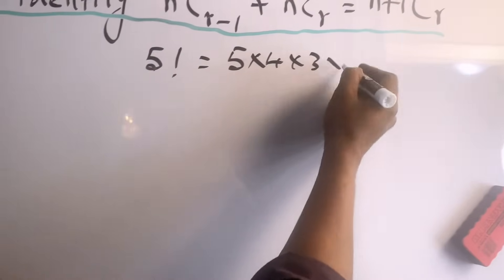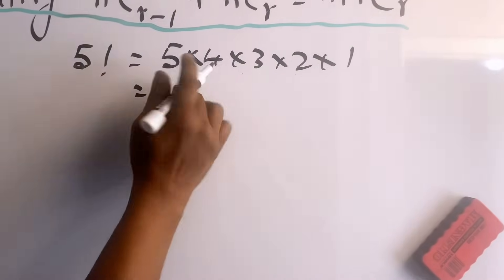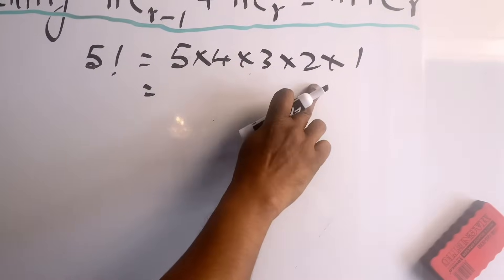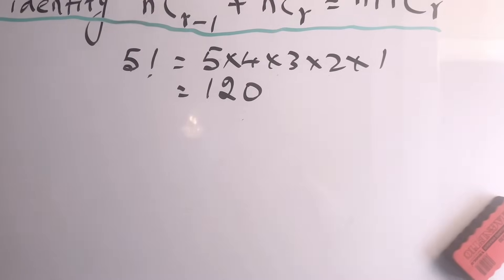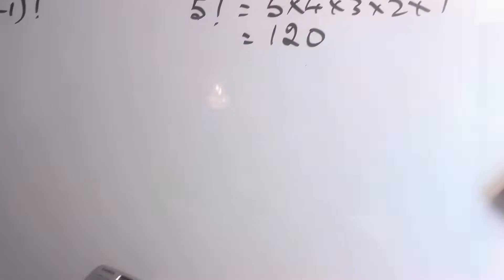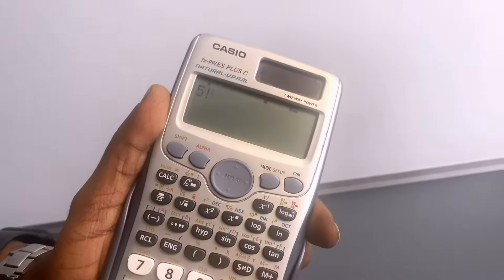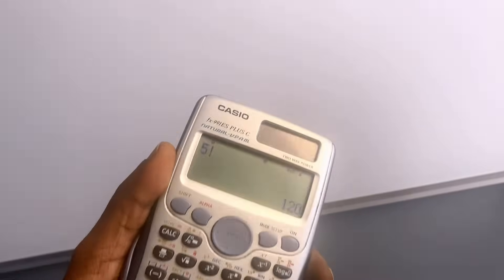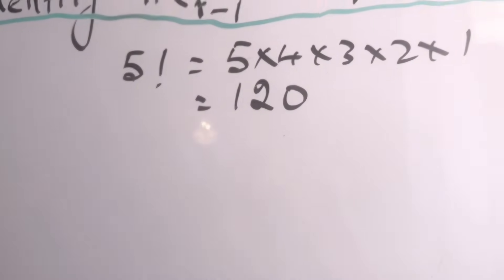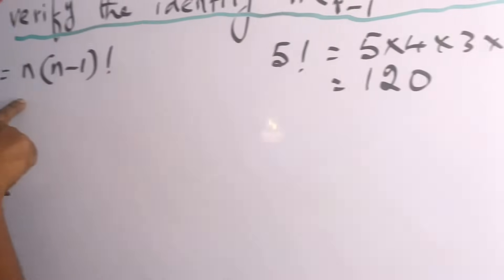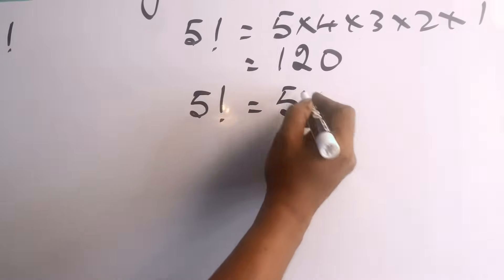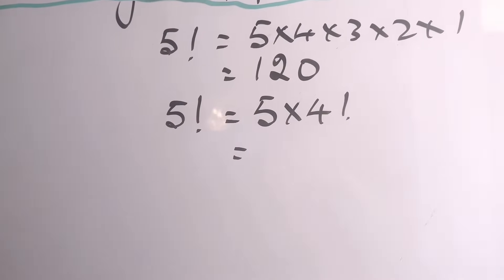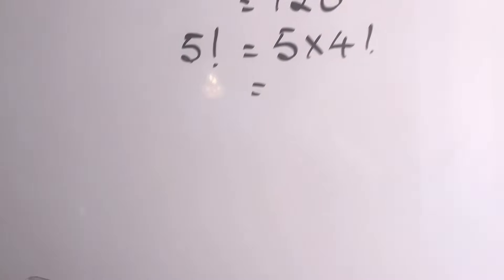For example, 5 factorial equals 5 times 4 times 3 times 2 times 1, which equals 120. You can also find this using a calculator — enter 5 factorial and the answer is 120.